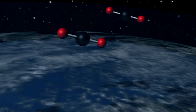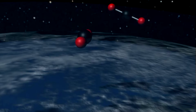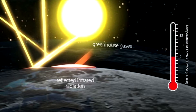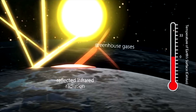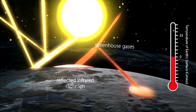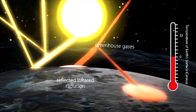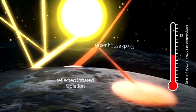They bend and stretch, re-emitting the infrared radiation in all directions. Some of the re-emitted energy comes straight back to Earth. Together, greenhouse gases cause the Earth's surface to be about 33 degrees Celsius warmer than it would be otherwise.